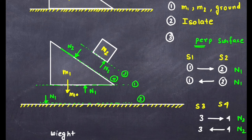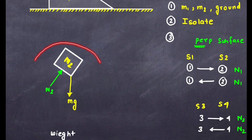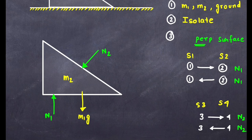The free body diagram of m2 shows N2 acting perpendicular to the surface (from surface 3 towards surface 4) and m2g acting downward. The free body diagram of m1 shows N2 coming from surface 4 towards surface 3, N1 coming from the ground upward, and m2g acting downward. The free body diagram of the ground shows N1 acting on it from the surface.